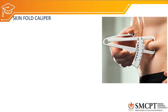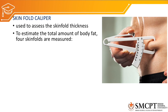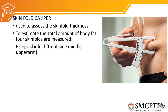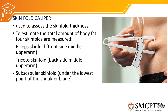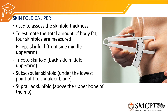A skin fold caliper is the tool used for measuring skin fold thickness. To estimate the total amount of body fat, four skin folds should be measured: number one, the bicep skin fold, measured at the middle part of the upper arm; number two, the triceps skin fold, taken at the back of the middle upper arm; number three, the subscapular skin fold, located under the lowest point of the shoulder blade or inferior angle of the scapula; and number four, the suprailiac skin fold on the iliac crest. Taking these four measurements allows us to estimate the total amount of body fat.